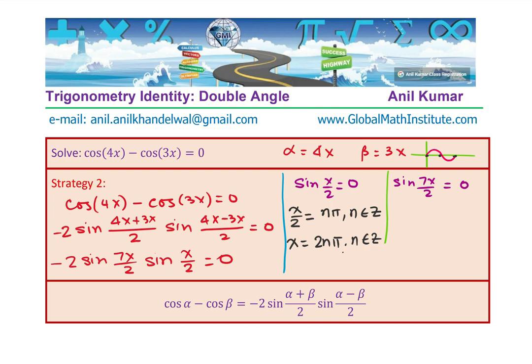The other one is that we have 7x by 2 equals to n pi. X is equals to 2n pi by 7. We have this set of solutions here and therefore we can now write down our answer. Is that x is equals to 2n pi or it is equals to 2n pi by 7, where n belongs to set of integers.